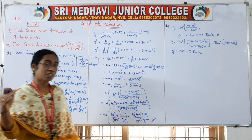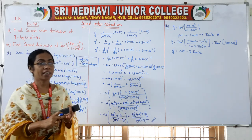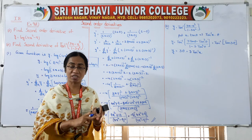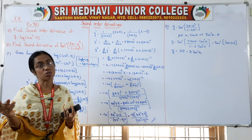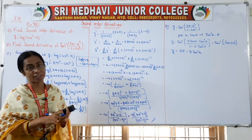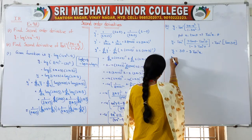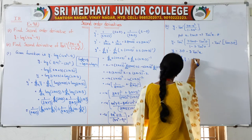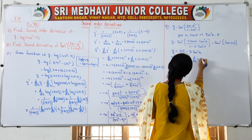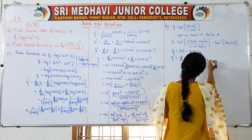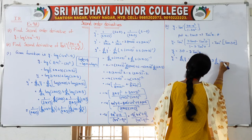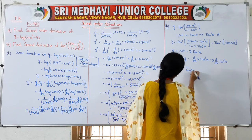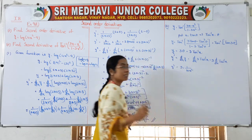This is called substitution differentiation. There are 3 methods: differentiation by substitution, logarithmic differentiation, and parametric differentiation. Now y = 3tan⁻¹x is very simple. The first derivative: y dash = d/dx(3tan⁻¹x) = 3·(1/(1+x²)). This is your y dash — the first derivative.